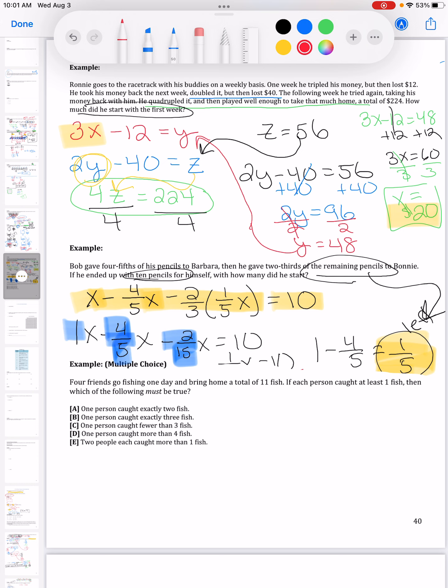We're going fishing. There are four friends that are going fishing and they bring home a total of eleven fish. I'm told everyone caught at least one fish. So for instance, the friends, each person could have caught one and then the other person caught eight because that adds up to eleven.